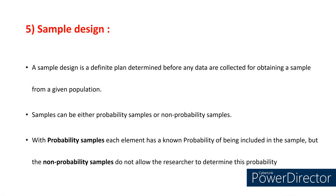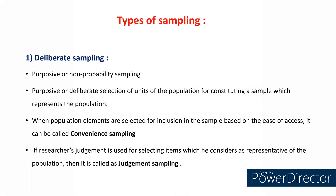Coming to the fifth step, sample design. A sample design is a definitive plan determined before any data are collected for obtaining a sample from a given population. Samples can be either probability samples or non-probability samples. With probability samples, each element has a known probability of being included in the sample, but non-probability samples do not allow the researcher to determine this probability. To start with deliberate sampling or purposive sampling, it is a non-probability sampling technique where we deliberately select units of the population constituting a sample which represents the population. When population elements are selected based on ease of access, we call it convenience sampling. If the researcher's judgment is used for selecting items considered as representative of the population, we call it judgment sampling.